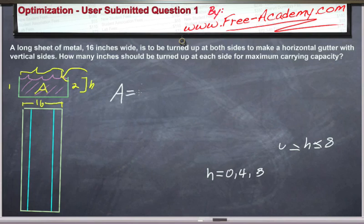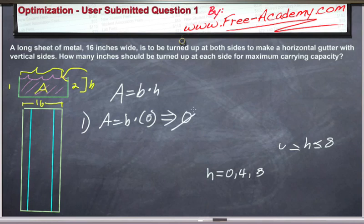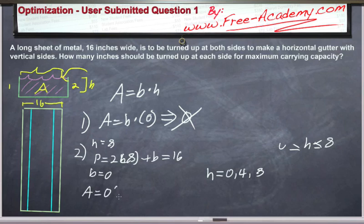And we're going to put this into our area equation, base times height. So we get the first case, we have area equals base times h equals 0. I think that's pretty easy to see that that's equal to 0 as well. So that's probably not going to be our maximum. In our second case, where we're going to do h is equal to 8, if you put it into the perimeter equation, 2h plus base equals 16. If this is 2 times 8, that's 16 already. That means base is equal to 0. So if you have area equals 0 times 8, that's also equal to 0. That's probably not our maximum as well.